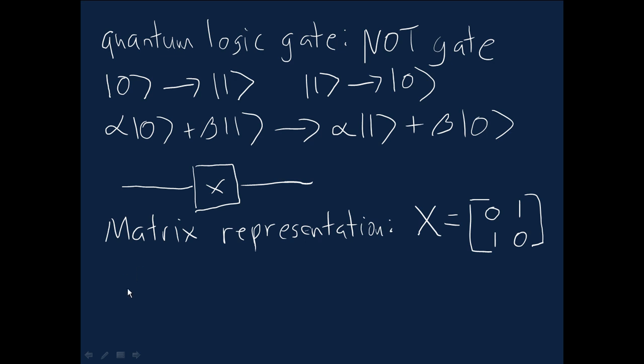We want the NOT gate, the X on 0 to produce the 1 state. What happens if we look at this matrix acting on the vector corresponding to the 0 state, which is just the 1, 0, as we've seen. It produces 0, 1, just the first column actually, because we've got a 1 up here. And that is indeed the 1 state.